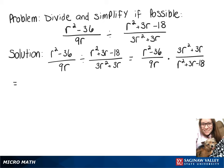Now we can combine that all to one fraction, so on top we'll have r squared minus 36 times 3r squared plus 3r over 9r times r squared plus 3r minus 18.